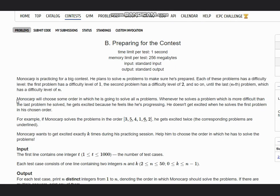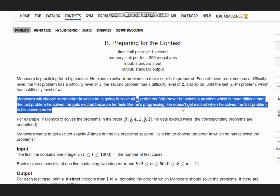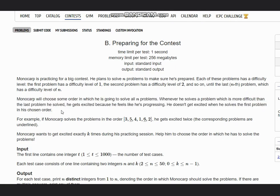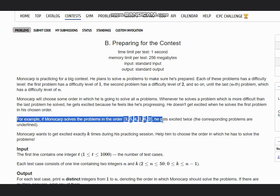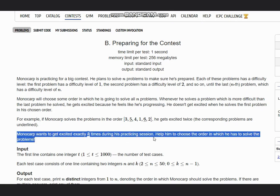Monocarp will choose some order to solve all n problems. Whenever he solves a problem which is more difficult than the last problem he solved, he gets excited because he feels like he's progressing. He doesn't get excited when he solves the first problem in his chosen order. For example, if Monocarp solves problems in the order 3, 5, 4, 1, 6, 2, he gets excited twice at 5 and 6. Monocarp wants to get excited exactly k times during his practice session.